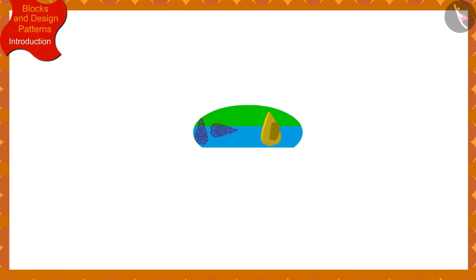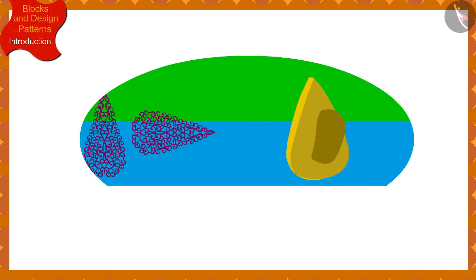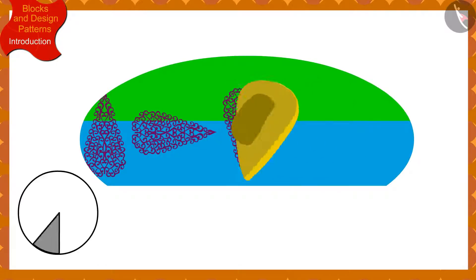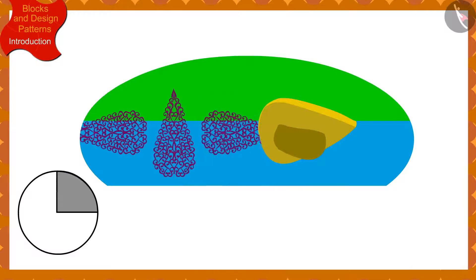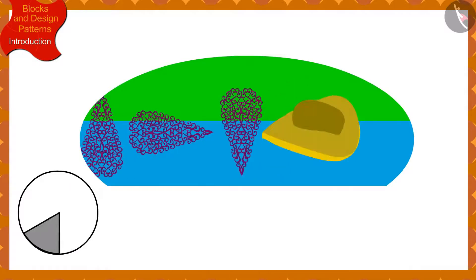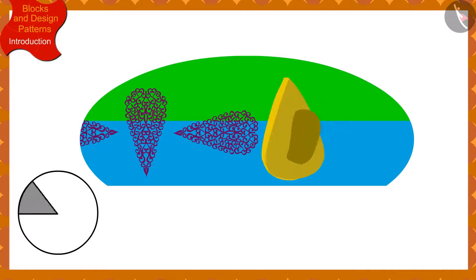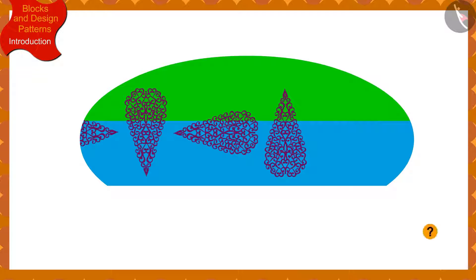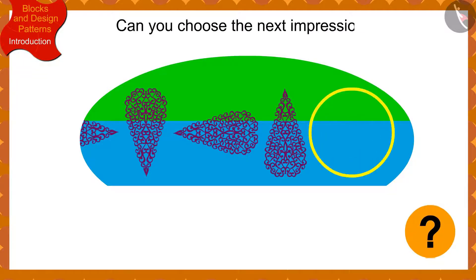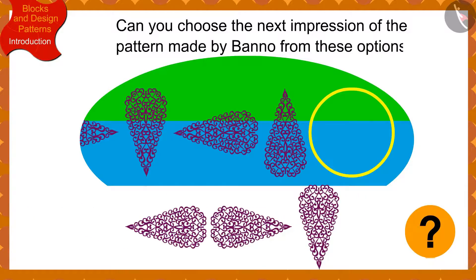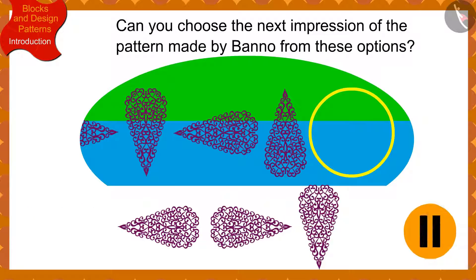Children, if Banno has made this design so far by rotating the block by a quarter in the clockwise direction every time, can you choose the next impression of the pattern made by Banno from these options? If you wish to, you may stop the video and think of the answer.